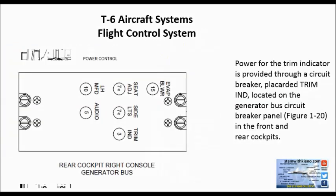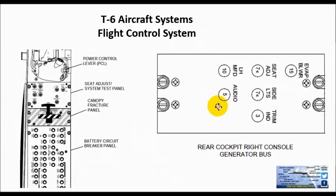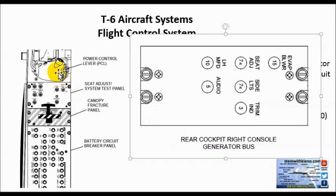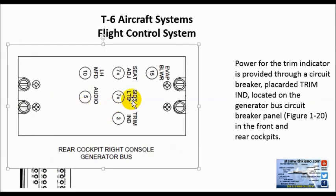Power for the trim indicator is provided through a circuit breaker placarded 'TRIM IND,' which means trim indicator. Here, this position is where you would have your PCL, your canopy fracture panel, then back to the battery circuit panel, and then keep going back until you came to these circuit breakers. Here's the trim indication. It's located on the generator bus circuit breaker panel in the front and rear cockpits.